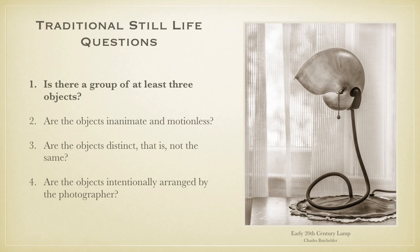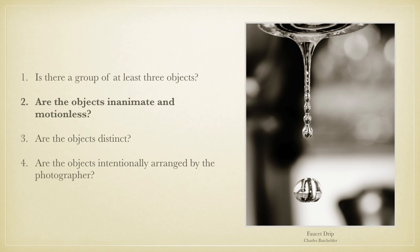The questions are: one, is there a group of at least three objects? Two, are the objects inanimate and motionless? Three, are the objects distinct — that is, not the same? And four, are the objects intentionally arranged by the photographer? In this first instance, there's really just one object — a lamp — not a group of objects. This photograph fails the first question and is not a traditional still life.